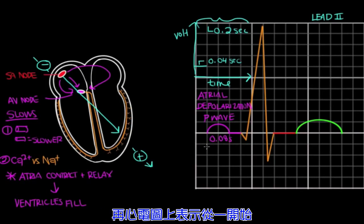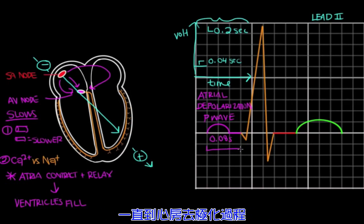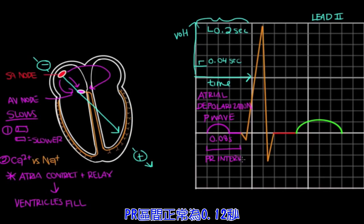On the EKG, the time it takes from the beginning of atrial depolarization, all the way up until ventricular depolarization is seen as the PR interval. And the PR interval is typically 0.12 seconds, or three boxes. It shouldn't ever be longer than 0.2 seconds, or something's wrong.